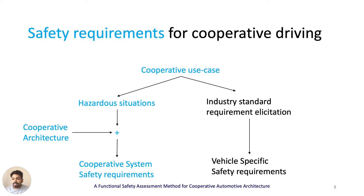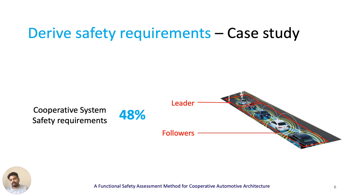Our method builds on current industry guidelines and practices. We applied our method to an academic prototype capable of autonomously forming a train of vehicles, with only the leading vehicle driven by a human. Our analysis showed that 48% of the safety requirements relate to the cooperative driving system. Not all requirements are equal — some have higher priorities than others. Our study further adds that requirements of low priority in an individual vehicle can transform into a requirement of high priority when considering the cooperative system.